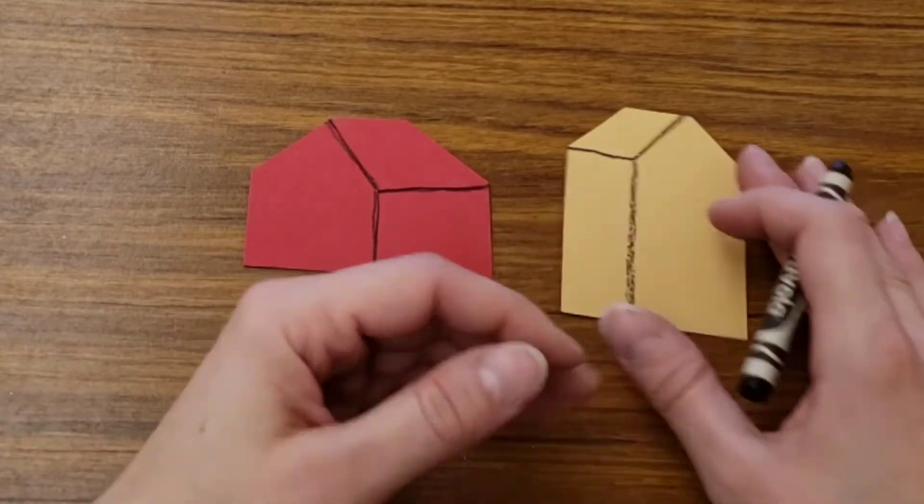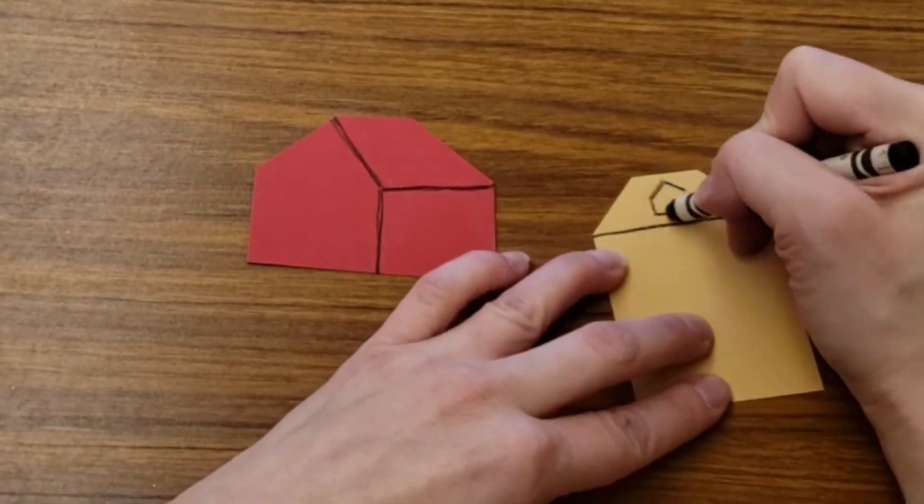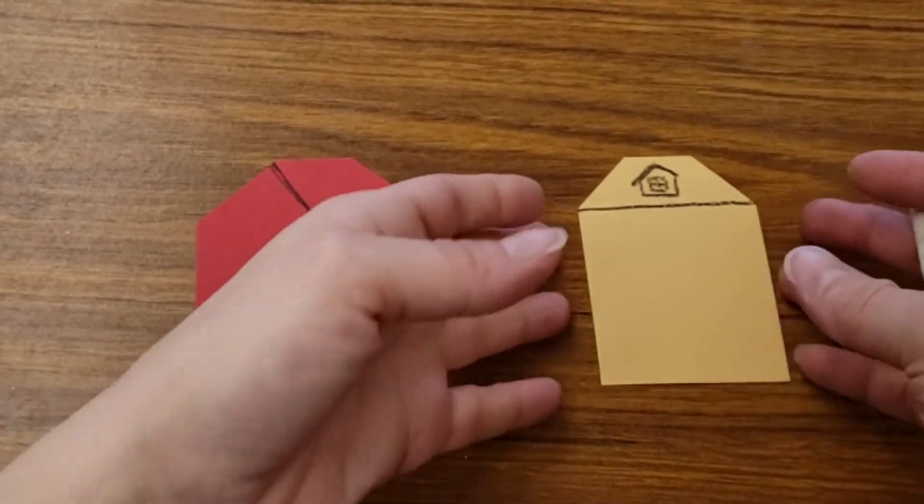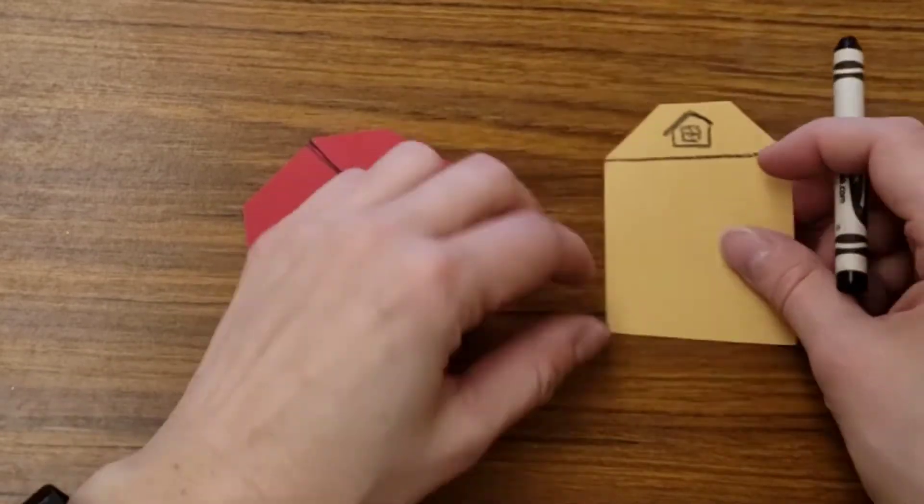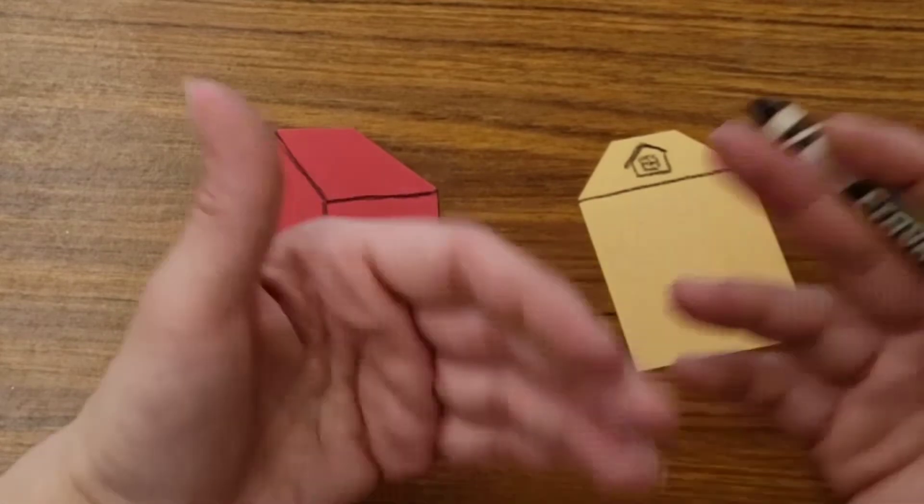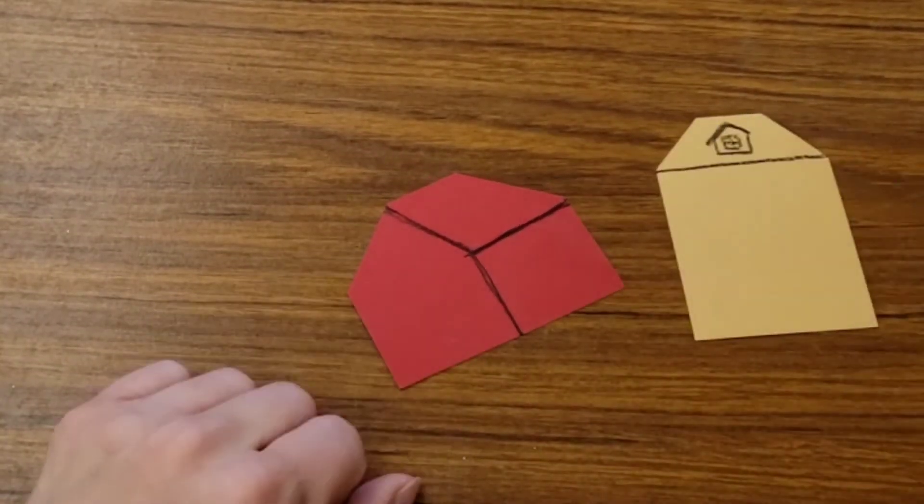You could also leave one of them so it's flat too. So one will be 3D, the other one is either 3D or flat. And you don't need to color on both sides. I was just using this to show you how. You only need to really color on one side.